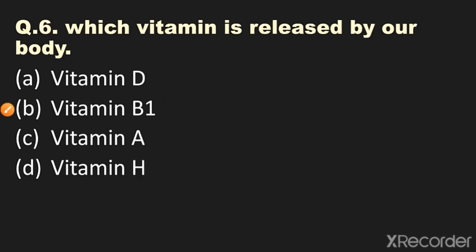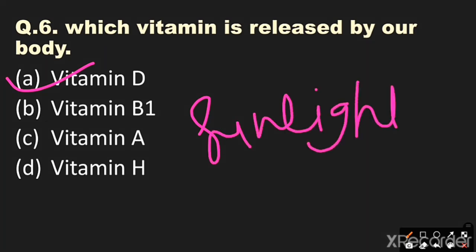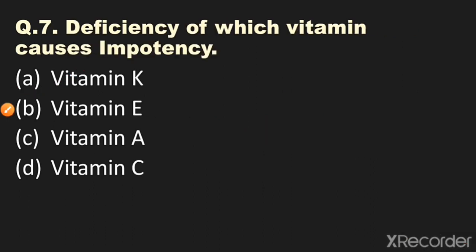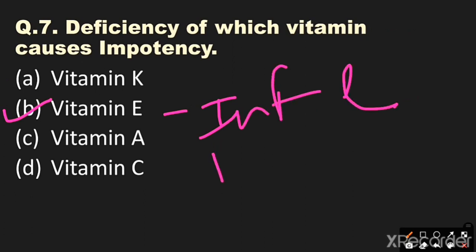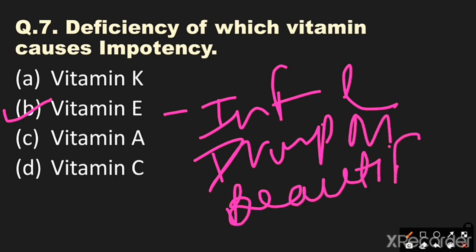Question number six: Which vitamin is released by our body? Options: A) Vitamin D, B) Vitamin B1, C) Vitamin A, D) Vitamin H. The answer is Vitamin D, as Vitamin D is synthesized by the body. Question number seven: Vitamin E causes infertility in females and impotence in males. It is also called the beauty vitamin and is found in all sorts of cosmetic products available in the market.